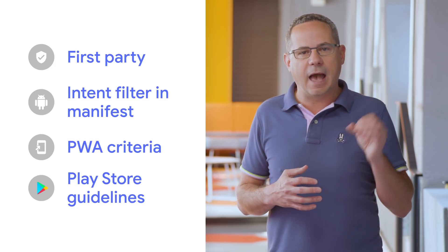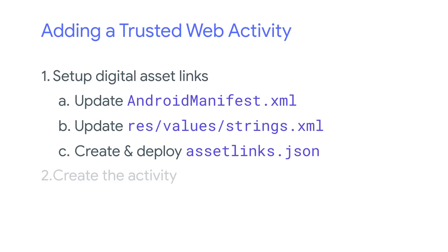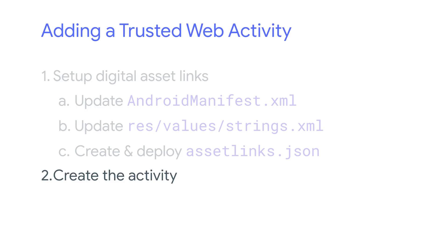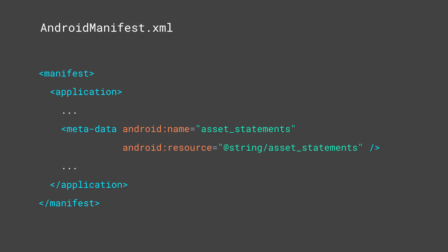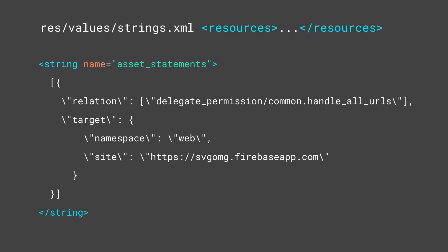Let's take a look at what's involved in adding a trusted web activity to your Android app. There are essentially two steps to embed our progressive web app in our Android app. First, we need to add a set of digital asset links. These links establish a relationship between our web content and the trusted web activity. By establishing this relationship, our Android app can verify that the content served is ours and meets that first party requirement. Then we can add the activity to our Android app and show our web content. In our Android manifest file, we need to tell it about an asset statement by adding this metadata attribute. Next, we need to update the strings.xml file and tell it about our web content, where it lives, and give it the permission that it needs.